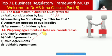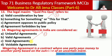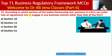Here C is the right option — a wagering agreement depends on uncertain future events. Next MCQ: according to which section of the Indian Partnership Act can partners in a firm enter into an agreement not to engage in any business activity other than that of the firm? Whether Section 10, Section 11, Section 20, or Section 21. Here B is the right option — Section 11.